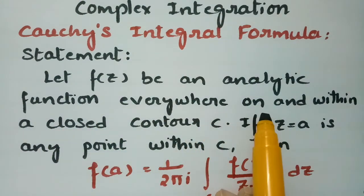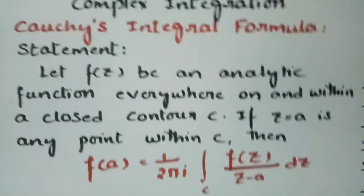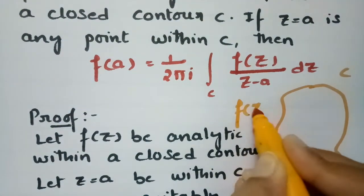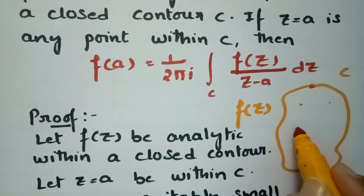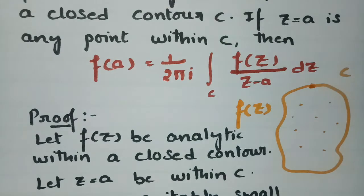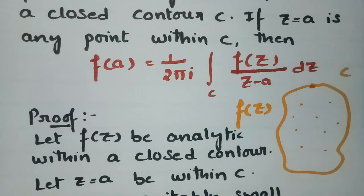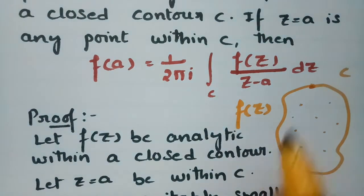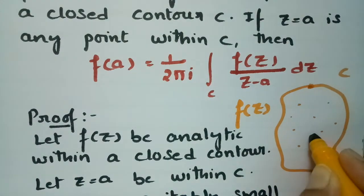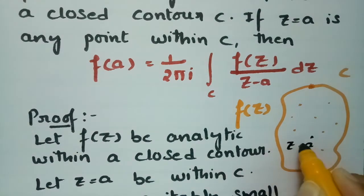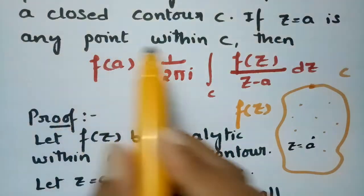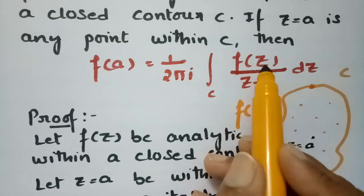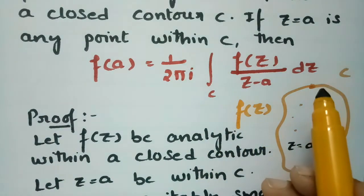f of z is given as an analytic function. It is analytic everywhere on and within a closed contour c. Let us take a closed contour c — this is some contour c. f of z is analytic on and within the contour c, meaning it is differentiable everywhere within and on the closed contour c. A contour is nothing but an irregular shape. It is given that if z is equal to a, and we consider a point z equal to some a, then f of a is defined as 1 by 2 pi i times of integral c of f of z by z minus a into dz.